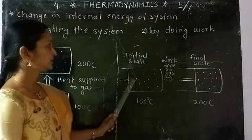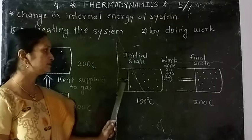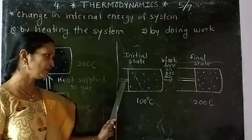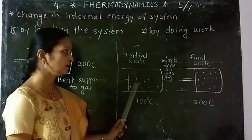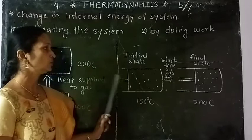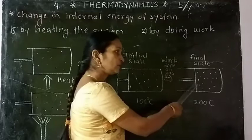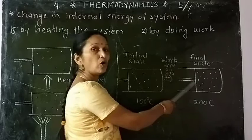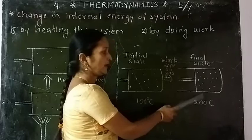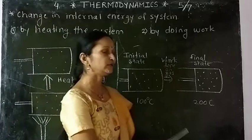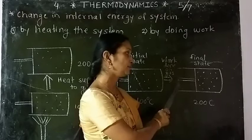The second way is by doing work on the system. Consider a gas contained in a cylinder with a massless, frictionless, movable piston. If the piston is moved inwards quickly, work is done by the piston on the gas — the gas is compressed. Due to this, the internal energy of the system increases and its temperature rises, suppose from 100 degrees Celsius to 200 degrees Celsius. This change in internal energy is caused by external work done by the piston on the gas.